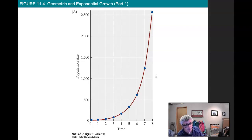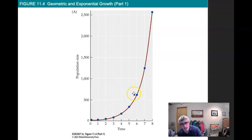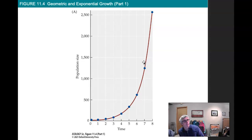Here's an example showing geometric growth as discrete dots versus a smooth exponential line. We have population counts at years 0, 1, 2, 3, 4, 5. The dots represent geometric growth and the smooth line represents exponential growth. With exponential growth you can calculate population at year 4.5 or 5.5, but with geometric growth you're only calculating population at discrete time intervals — it's a discrete function as opposed to a continuous function.